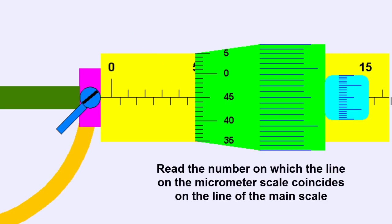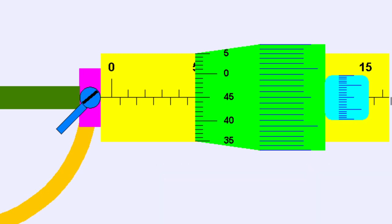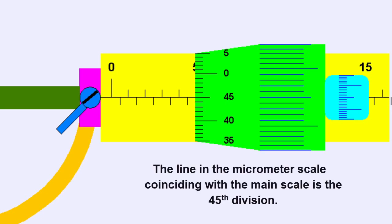Next, read the number on which the line of the micrometer scale coincides with the line of the main scale. Remember that there is no perfect measurement. Thus, the line of the micrometer scale coinciding with the main line depends on your eyes. In the simulation, the line of the micrometer scale coinciding with the main line is the 45th division.